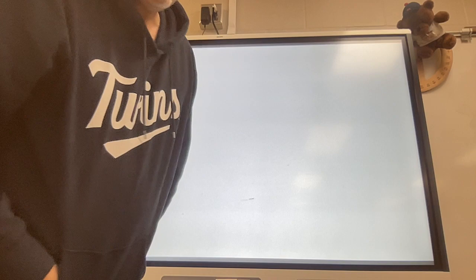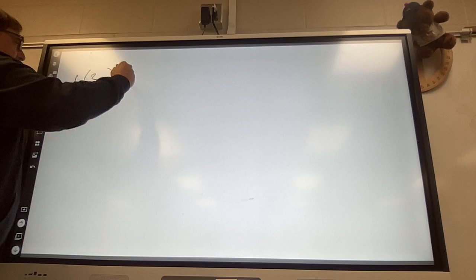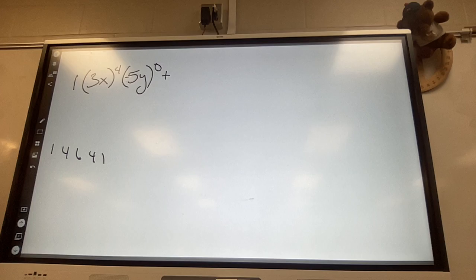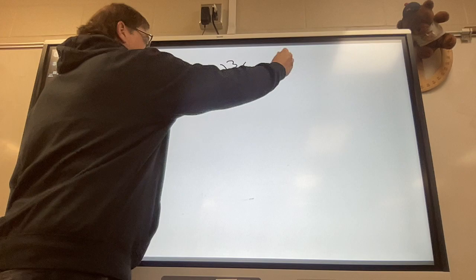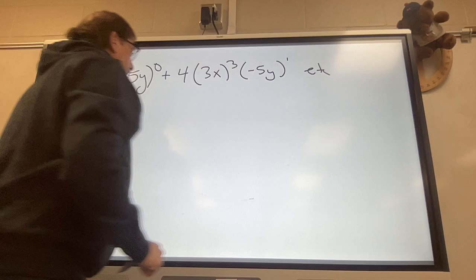Like problem number three. So it has already been started out. So I'll do a different one than you've got. So I'll put like three x to the fourth, and then five, negative five y to the zero, plus. So if this is the fourth row: one, four, six, four, one. Was that the fourth row? Yep. And then plus four, three x to the third, times negative five y to the first. So this is not the one on your review sheet. And I'm just going to go et cetera. I'm not going to finish it out.